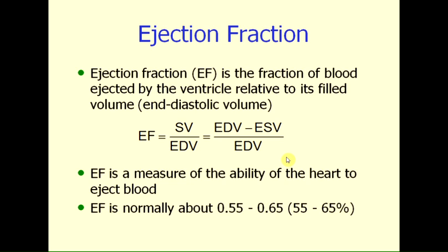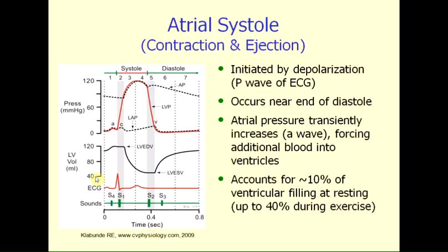Another important definition with clinical significance is the ejection fraction. The ejection fraction is the fraction of blood ejected by the ventricle relative to its filled volume, or end-diastolic volume. Mathematically, ejection fraction (EF) equals stroke volume divided by end-diastolic volume, or equivalently EF equals end-diastolic volume minus end-systolic volume divided by end-diastolic volume. Ejection fraction is important because it is a measure of the heart's ability to eject blood. Normally, ejection fraction is about 0.55 to 0.65, or 55 to 65 percent, meaning the ventricle ejects approximately 60 percent of its filled volume.